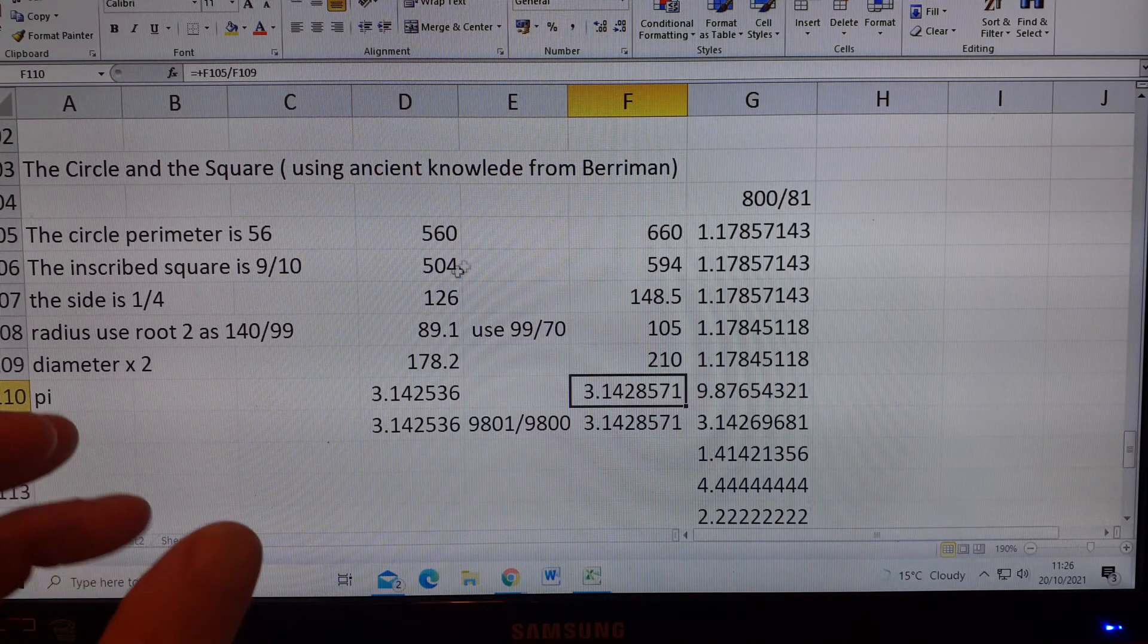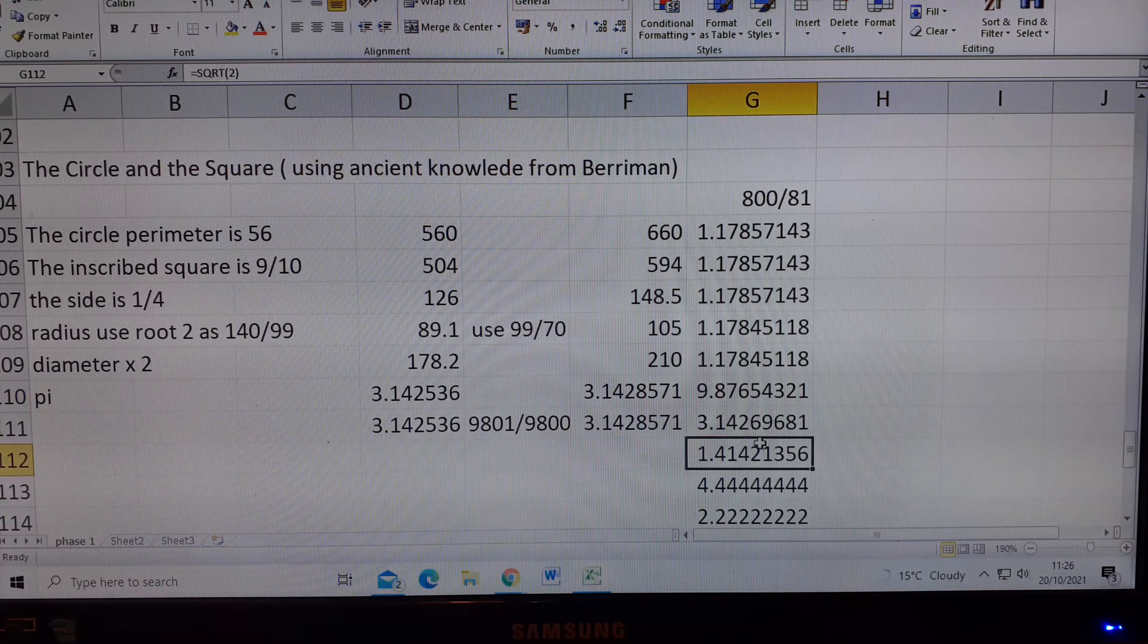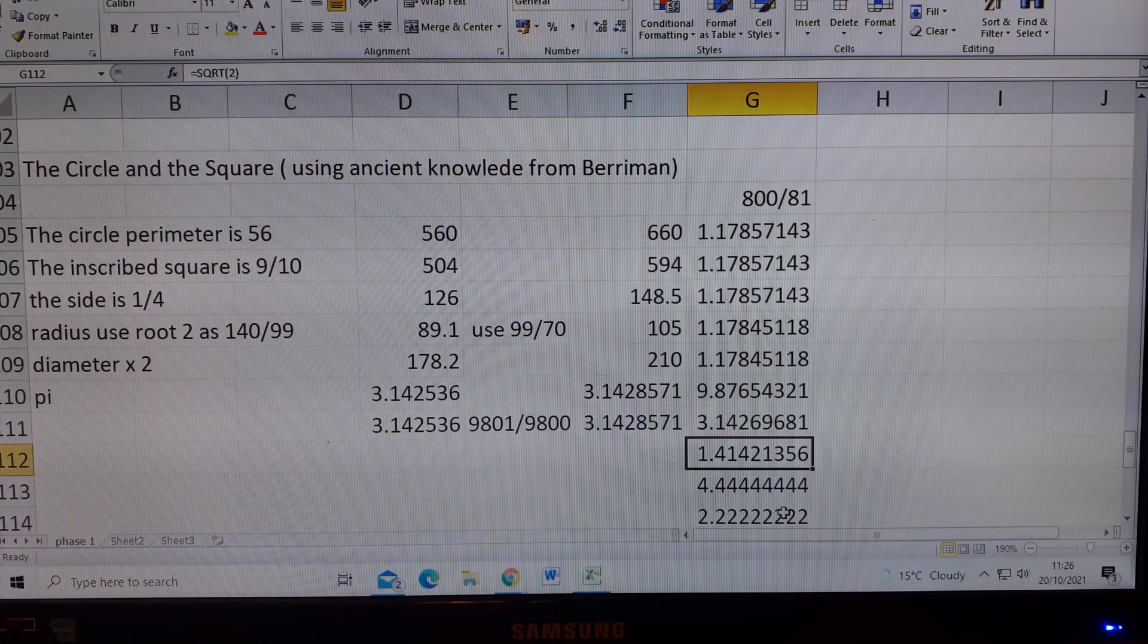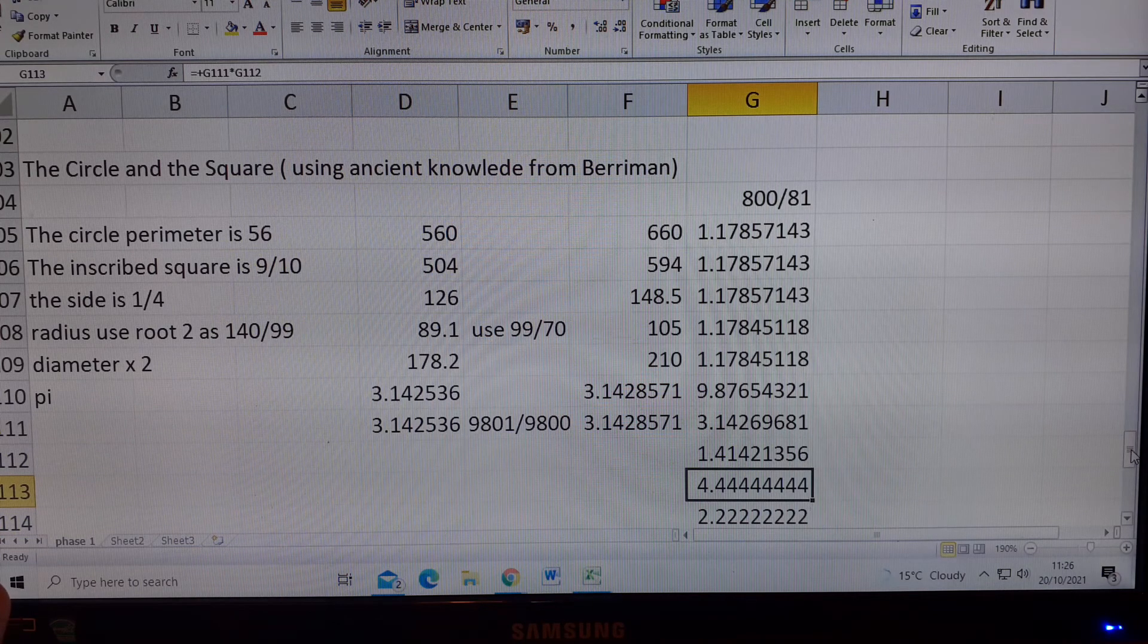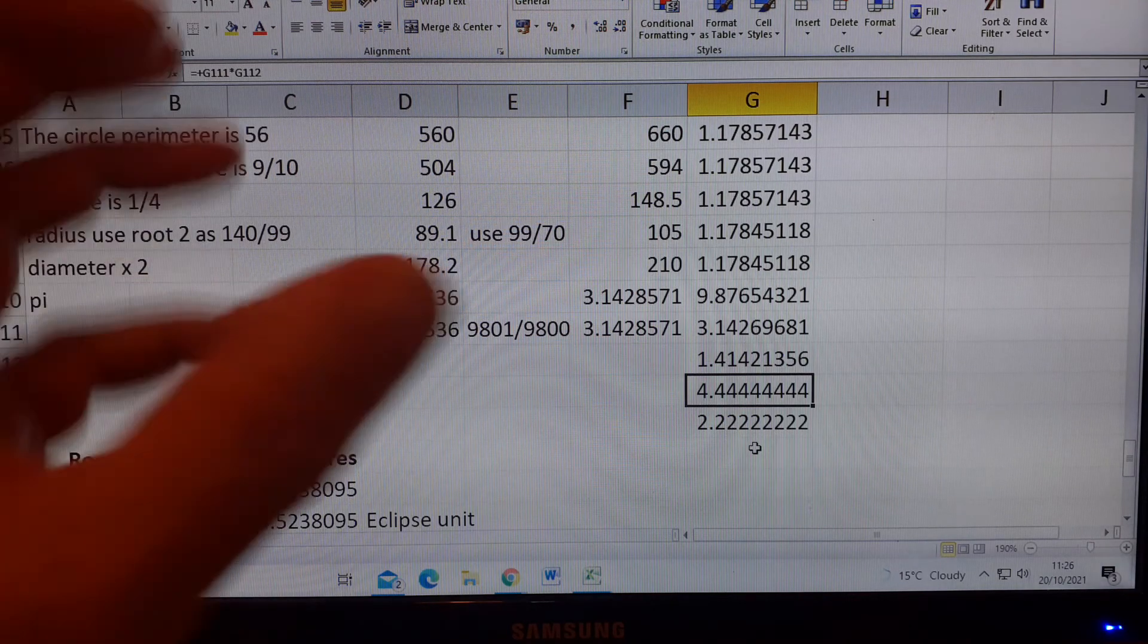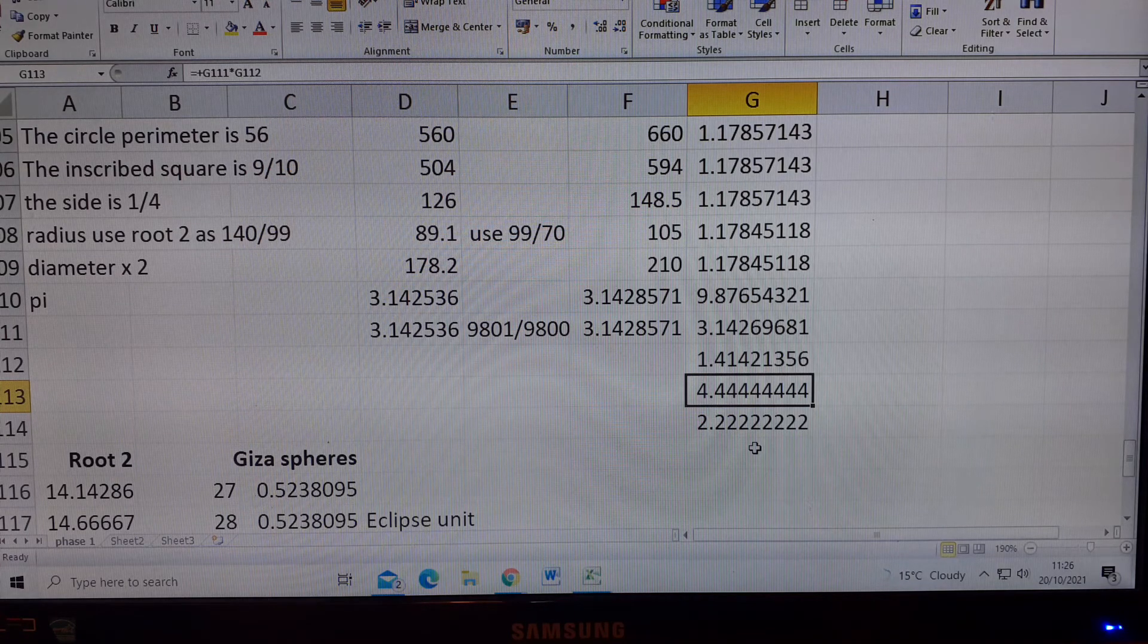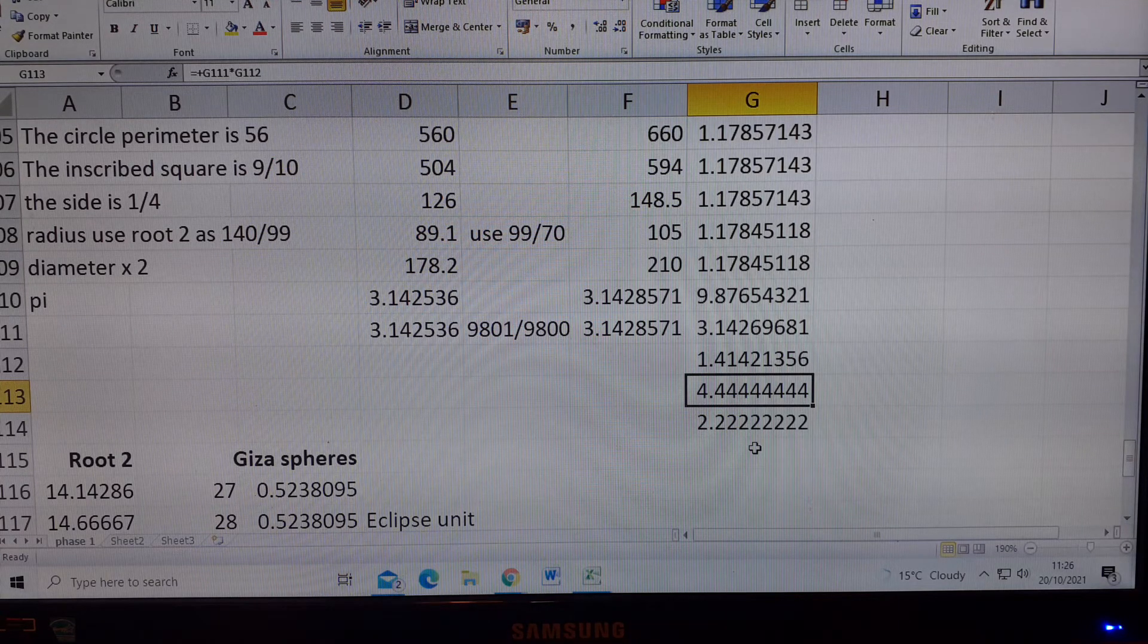So the ancients knew all this, and the fantastic calculation is when we divide this by root 2, we get that, and when we multiply it by root 2, we get that. So these two units, these figures are showing exactly what the ancients knew, and it's all in decimal, but it can all be worked out in fractional notation, but it's very difficult to show it as simply as this using fractional notation.